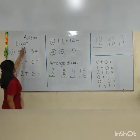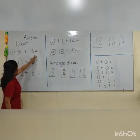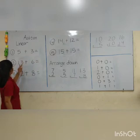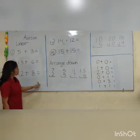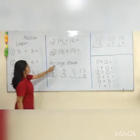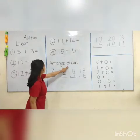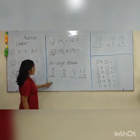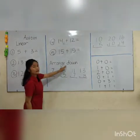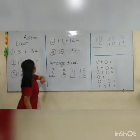Why do we say addition linear? Because the numbers go to this side — the numbers go horizontally. And arranged down means the numbers go down. So that's why we call it arranged down.